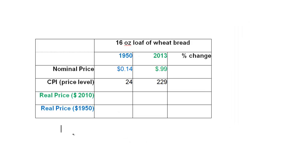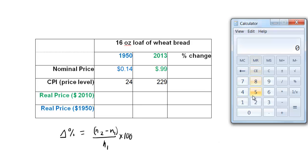So the first thing we're going to do is our percent change formula. I'm just going to write this as delta percent equals N2, the second number minus the first number, divided by the first number, times 100 to put it in percent form. Let's do that on the calculator. 99 cents, 0.99, minus 14 cents, 0.14, equals 0.85.